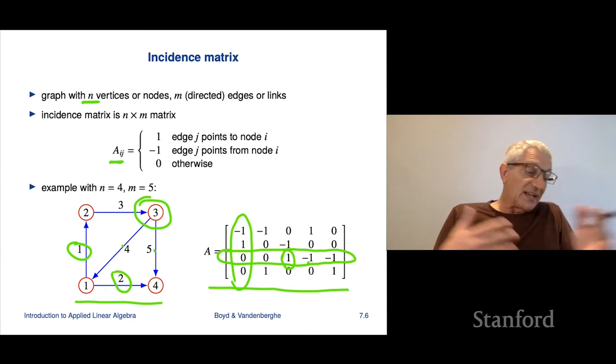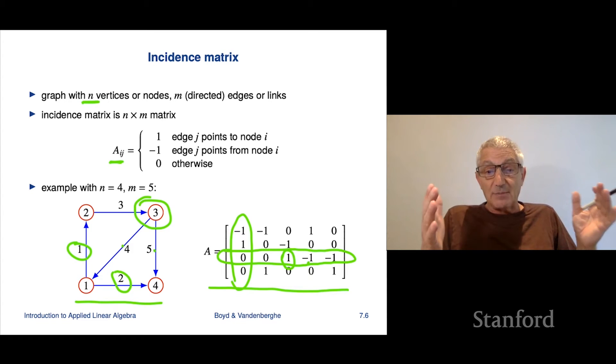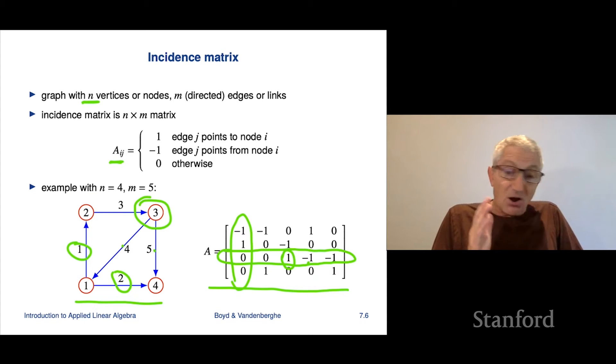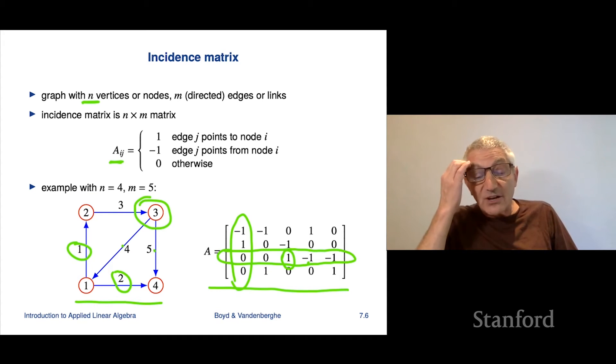So again, the columns tell you about a single edge - it tells you where the edge comes from and where it goes. And a row focuses on a node, and it tells you which of the edges are coming in, which are outgoing, and which have nothing to do with that node. So that's a graph. Now these come up in a ton of applications. I'll say a little bit about it, and we'll probably see some later in the class as well.